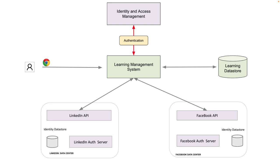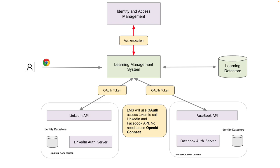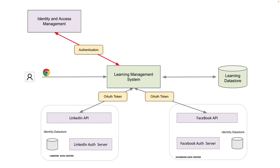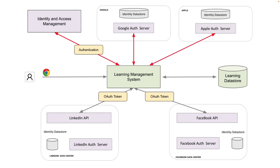That sounds like a good idea because many users would not want to give out their personal information. Coming back to OpenID Connect — I have moved the identity and access management to the left side to make room for more identity management systems. Now the situation is you want the learning management system to access Google and Apple OpenID Connect servers so that users can log into the learning management system. Google and Apple both have their own authorization servers and their own identity data stores. So now anybody who has a login account in Google or Apple should be able to log into the learning management system.